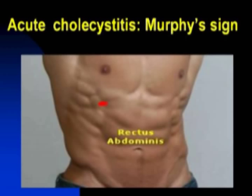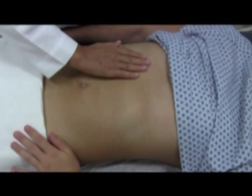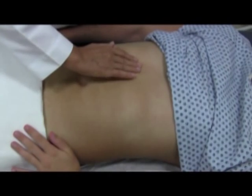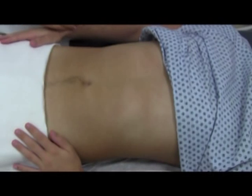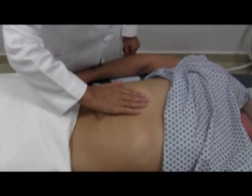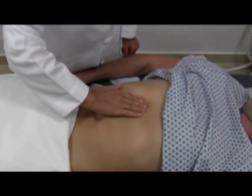When right upper quadrant pain and tenderness suggest acute cholecystitis, look for Murphy's sign. Press the right upper quadrant at the point where the lateral border of the rectus muscles intersects with the costal margin. Ask the patient to take a deep breath. A sharp increase in tenderness with a sudden stop in inspiration constitutes a positive Murphy's sign of acute cholecystitis.